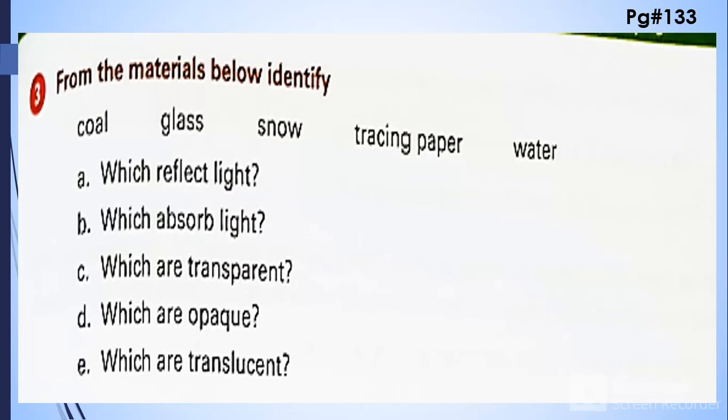Come towards the third question. From the material below, identify which reflects the light. So glass, snow, and water are reflecting the light. Which absorbs light? So coal and the tracing paper is absorbing the light.